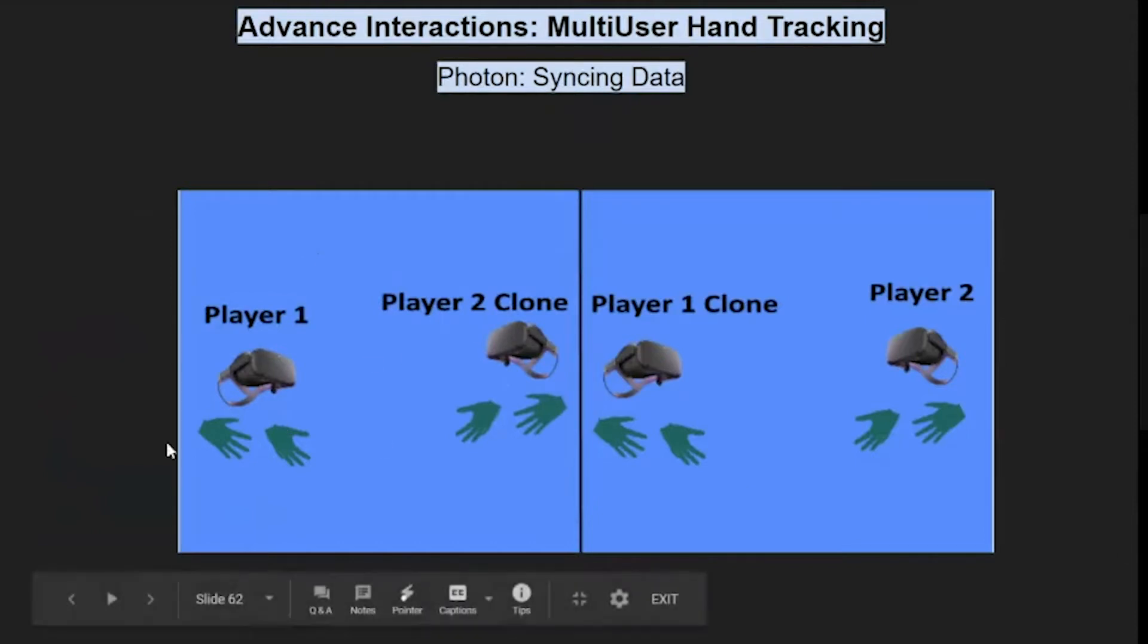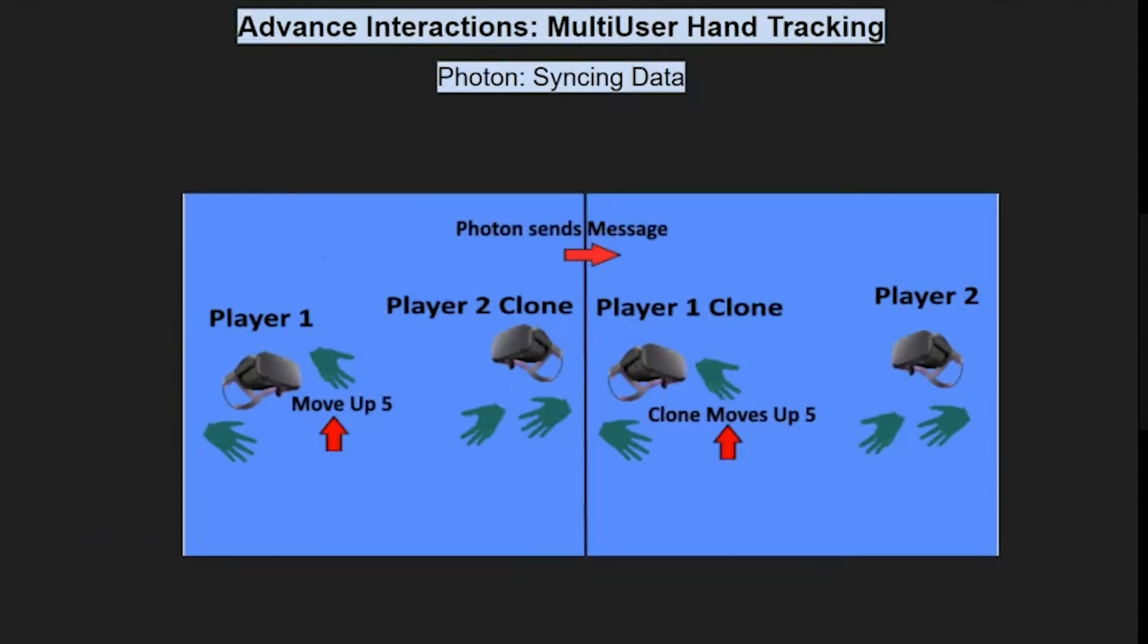You have two players - the screen on the left is one Oculus Quest, the one on the right is another Oculus Quest. You have Player 1, you have Player 2. What Player 1 is actually seeing is a clone of Player 2, and what Player 2 is seeing is a clone of Player 1.